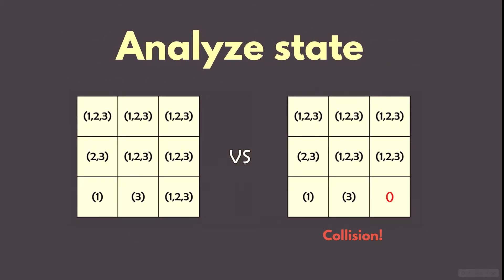Because propagation reduces the possible indices list, there might be a situation where there is simply no possible index left inside the grid, inside the list for a certain cell. This is what is called a collision.